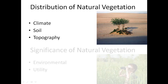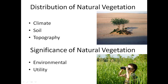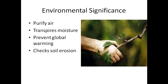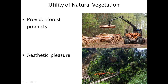Now we will understand the significance of natural vegetation — both environmental significance and utility. Environmentally, it purifies air by taking carbon dioxide and giving back oxygen. It transfers moisture into the environment and through evapotranspiration attracts rainfall. It prevents global warming, which is one of the recent issues many countries are facing. It also checks soil erosion — planting more trees plays a very important role in controlling soil erosion.